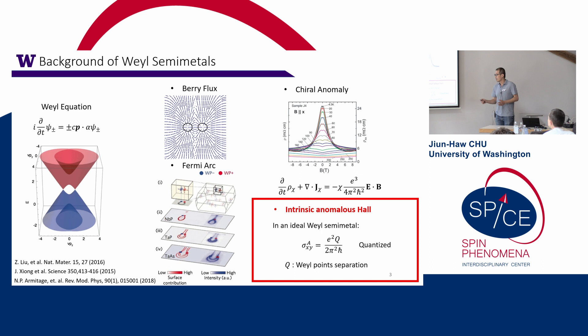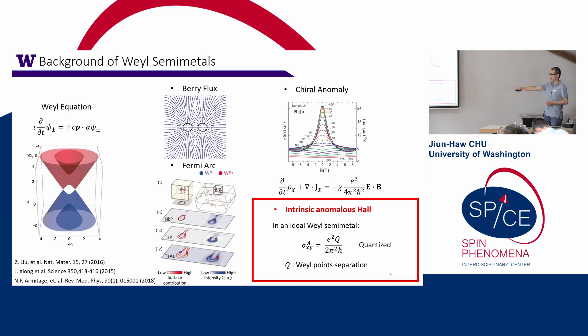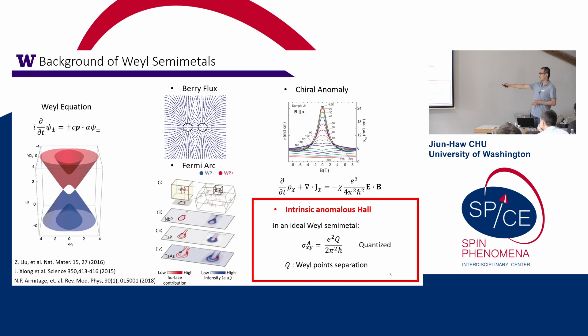Claudia has already given a very nice introduction about the topological phase of matter and Weyl semimetals. In materials where you have broken time-reversal or inversion symmetries, you have non-degenerate bands which can cross at points in momentum space where the dispersion is described by the Weyl equation. These Weyl points can be thought of as monopoles of the Berry curvature — sources or sinks of the Berry flux depending on the chirality. An important consequence is that you get Fermi arc surface states, which were discovered very early on since the proposal of Weyl semimetals.